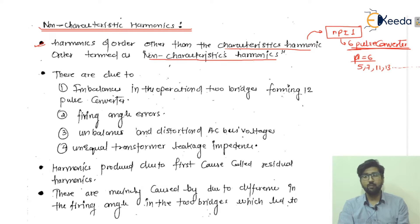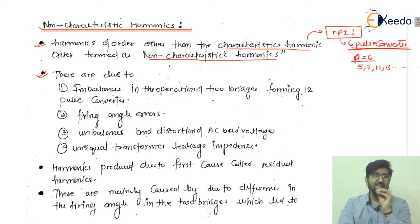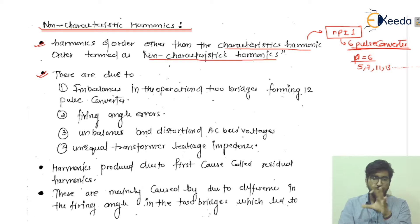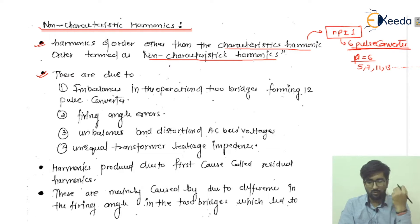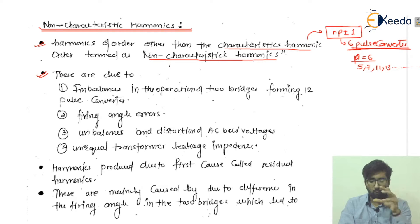Now we need to understand why non-characteristic harmonics actually occur, because although we know both characteristic and non-characteristic harmonics are harmful to system equipment, system connections, and the supply, we need to understand why they are categorized in a different way.